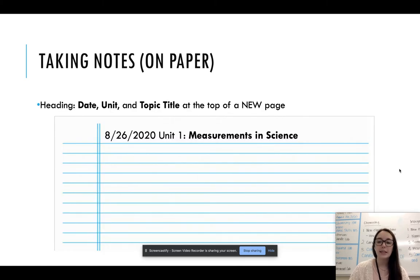So to begin, taking notes on paper, you will always title it with a heading of a date, the unit, and then the topic title. So in this case, the topic title is Measurements in Science. And so you will have the date, today's date is the 26th. For those of you viewing it at a later date, it is not the 26th. So make sure to record that. Put Unit 1, Measurements in Science.